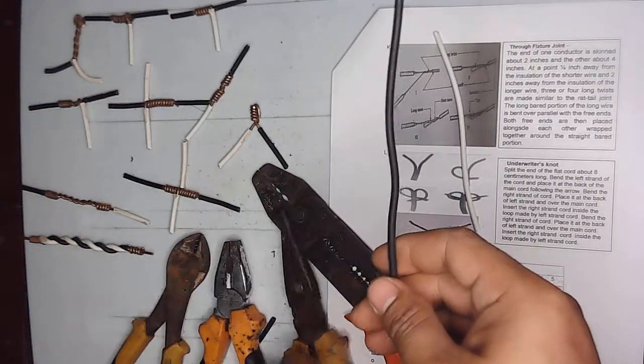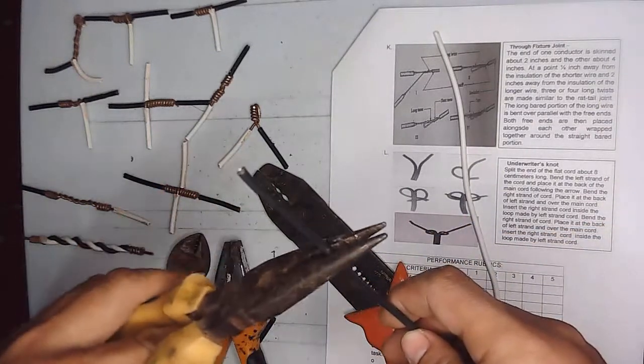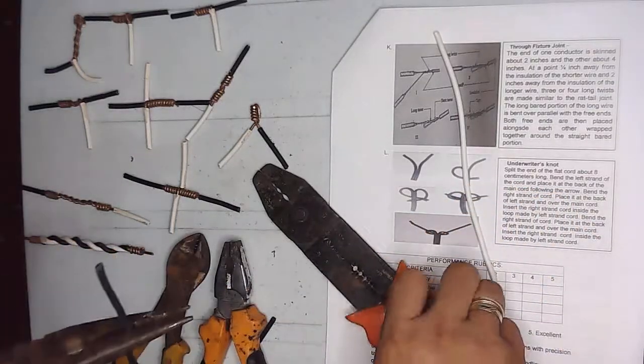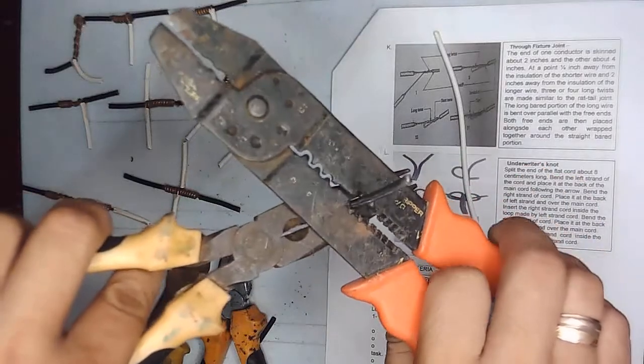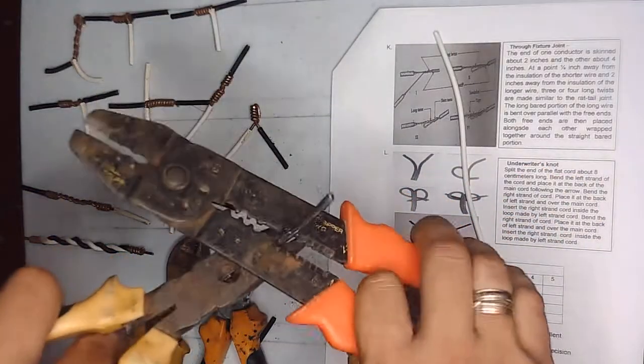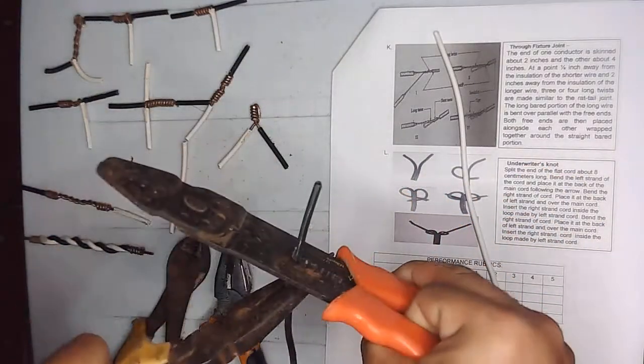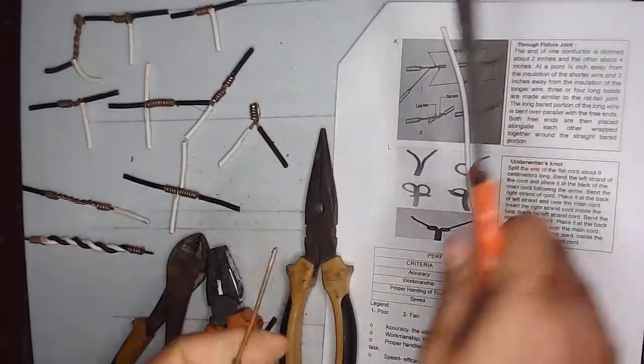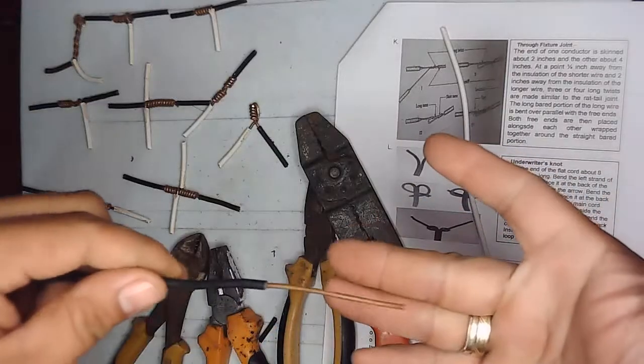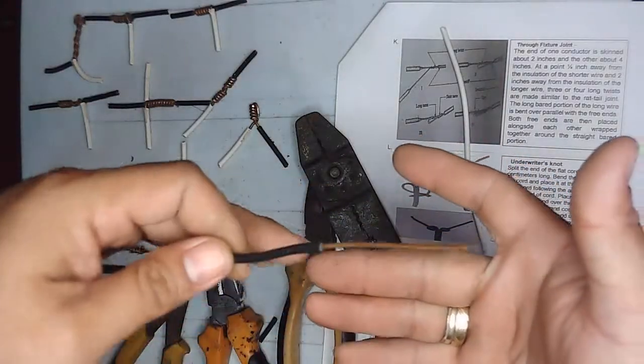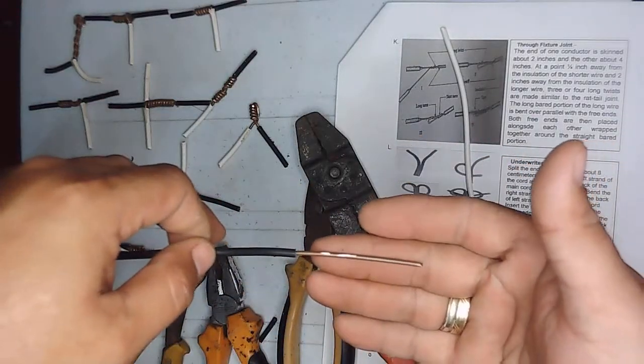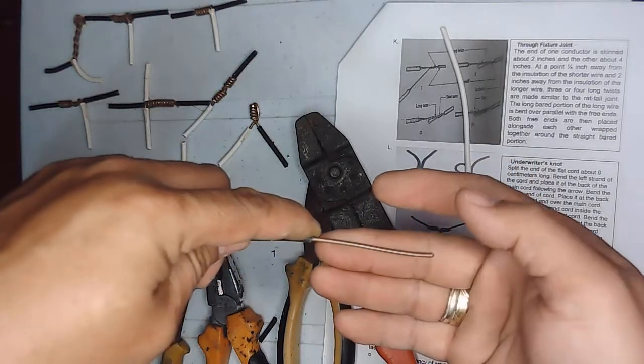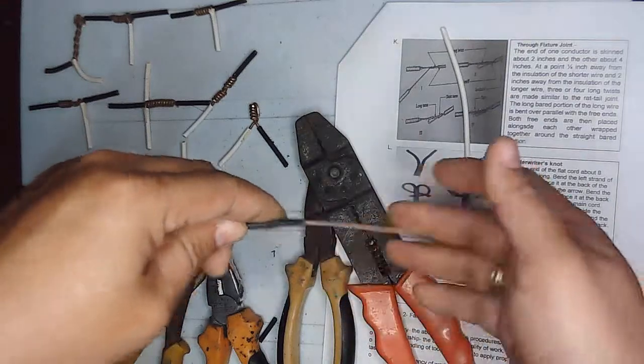So the shorter one, or the black wire, we will strip simply about two inches. I just use my middle finger to estimate the length of the wire, which is about two inches.